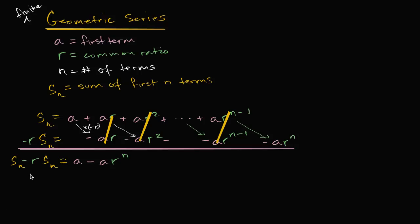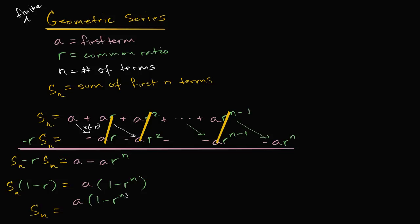Now we can solve for S sub N. On the left hand side, we factor out S sub N, giving us S sub N times one minus R, which equals — on the right hand side, factoring out A — A times one minus R to the N. So to solve for S sub N, we divide both sides by one minus R, giving us S sub N equals A times one minus R to the N, over one minus R.